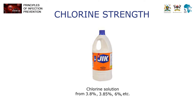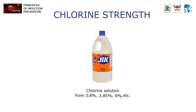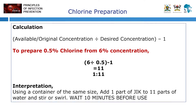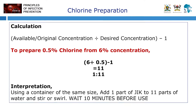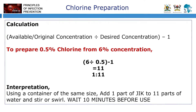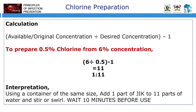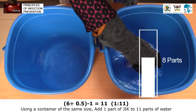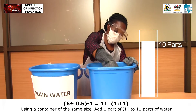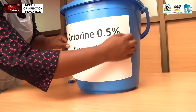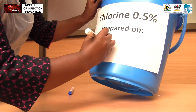Chlorine solution comes in different strengths ranging from 3.8% to 6%. To prepare 0.5% chlorine using 6% solution, we divide the original concentration, which is 6%, by the desired concentration, which is 0.5%, and subtract 1. The answer is 11, meaning we add one part of jik to 11 parts of water to obtain 0.5% chlorine solution.